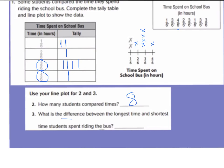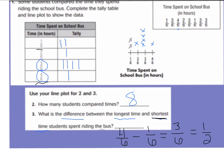Number three: what is the difference between the longest time and the shortest time? We heard the word difference, so we are going to subtract. The longest time is the greatest fraction — four-sixths. We subtract the shortest time, which is one-sixth. Four-sixths minus one-sixth: we have the same denominator, so we just look at the numerators. Four minus one is three, and our denominator stays six. Three-sixths equals one-half. That is the difference between the longest and shortest times students spent riding the bus.